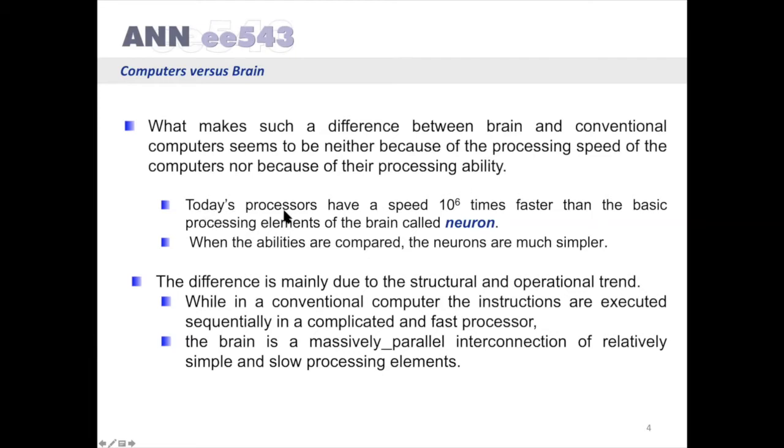Today's processors have a speed 10 to the 6 times faster than the basic processing elements of the brain called neurons. When the abilities are compared, the neurons are much simpler.